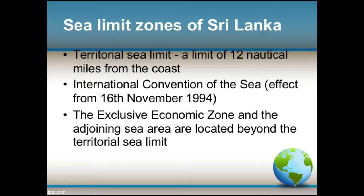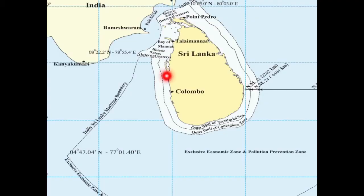Sri Lanka has an individual boundary and a territorial sea limit. The territorial sea limit includes a limit of 12 nautical miles from the coast. All coastal states were granted ownership of a territorial sea limit, which came into effect from 16th November 1994 according to the international convention of the sea. This is the territorial sea limit, and it goes for 12 nautical miles from the coast.